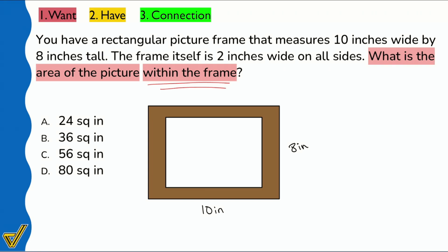So here's what the problem is trying to tell us my party people. It's going to be really straightforward. So what we're saying is the big frame is again 10 inches wide, 8 inches tall. But then this is the part that we really want to pay attention to. The frame itself is 2 inches wide on all sides. What does that mean?